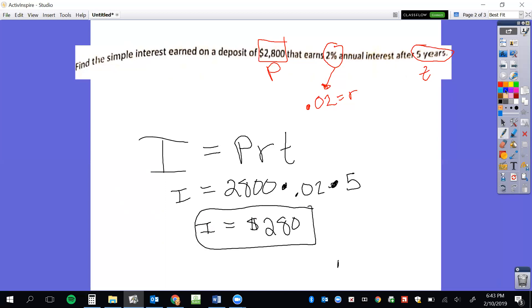Now if this problem said, what is my account balance after five years, we would have to do one extra step. I would have to take my principal and then add my interest to it. So if it asks what's the balance after five years, we would take $2,800 plus $280 and we would get $3,080. However, that's not what the question asked. So the answer for this question is $280.